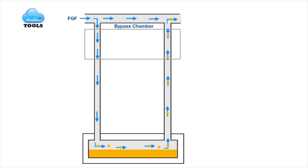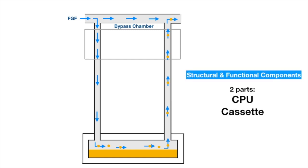Now you are thinking: what's special about the Aladdin vaporizer? How does it give precision output and the safety features it's known for? No worries — the answer follows. Let us see the structural and functional components of the Aladdin vaporizer. Two parts: one, the central processing unit (CPU); and two, the agent-specific vaporizer chamber or cassette.